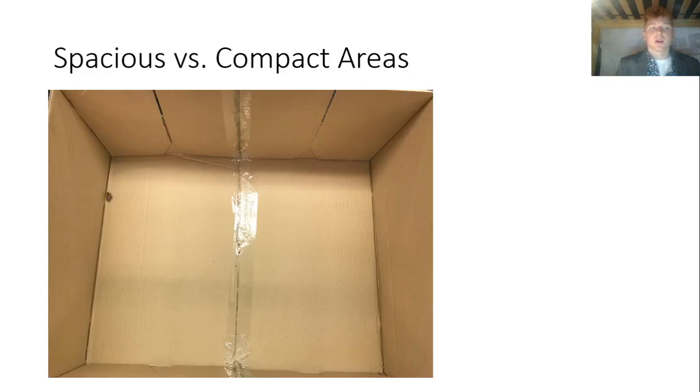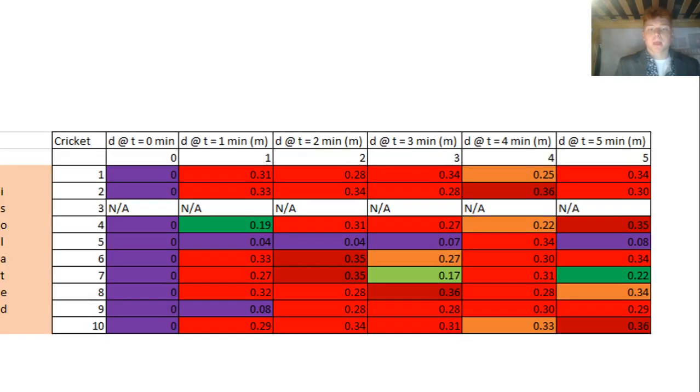So I got into my first preliminary test, looking at spacious first compact areas, looking for preferences amongst crickets. I dropped them in the middle of a box. If they prefer spacious areas they would stay closer to the center of the box away from the walls. And if they prefer compact areas, they would go towards the walls. I did so using this data table plotting points at time equals 0, 1, 2, 3, 4, and 5 minutes, which is what I would do throughout the rest of this presentation.